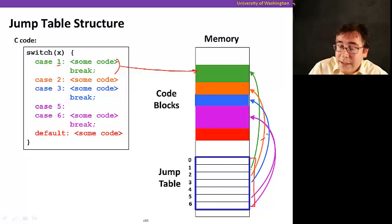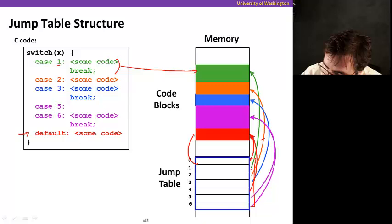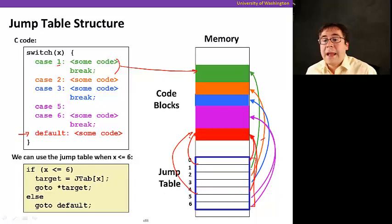Now note there's an interesting case here which is the default case. The default case, as I said before, gets executed if the value of x happens to be none of the values explicitly defined by cases. So here, if it happens to be 0, we're going to jump to the default case. If it also happens to be 4, we're going to jump to the default case.